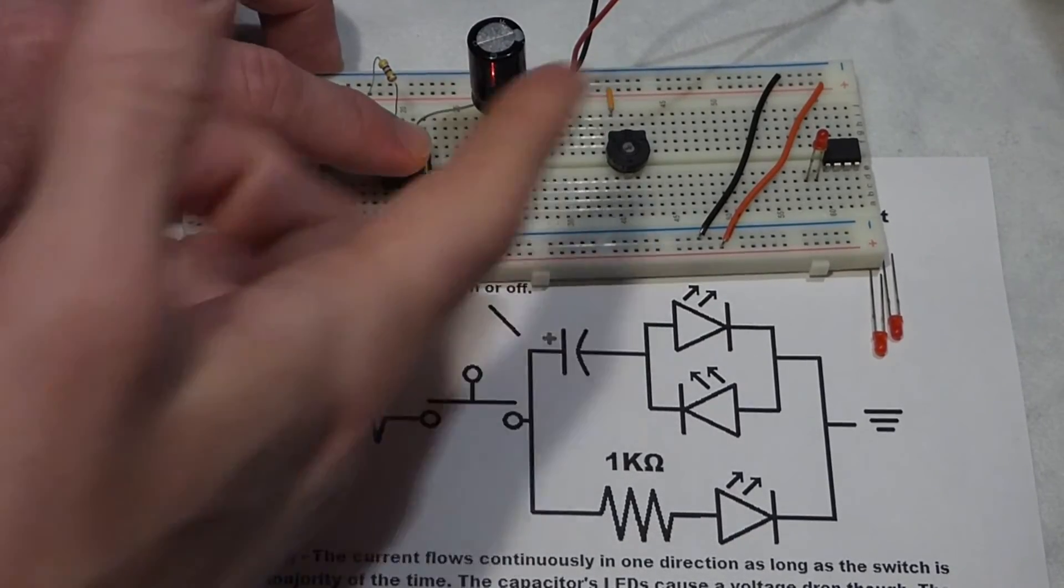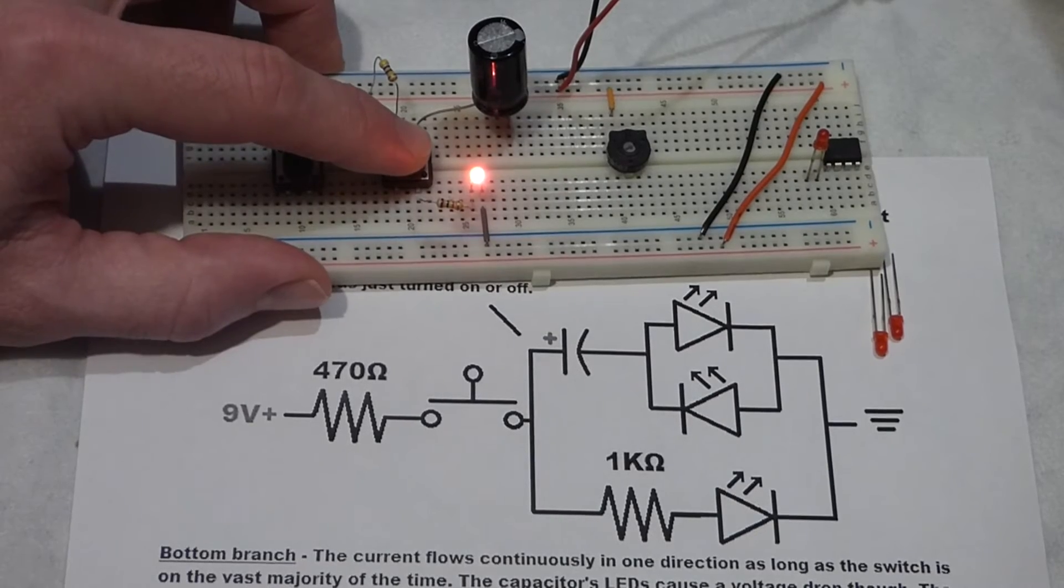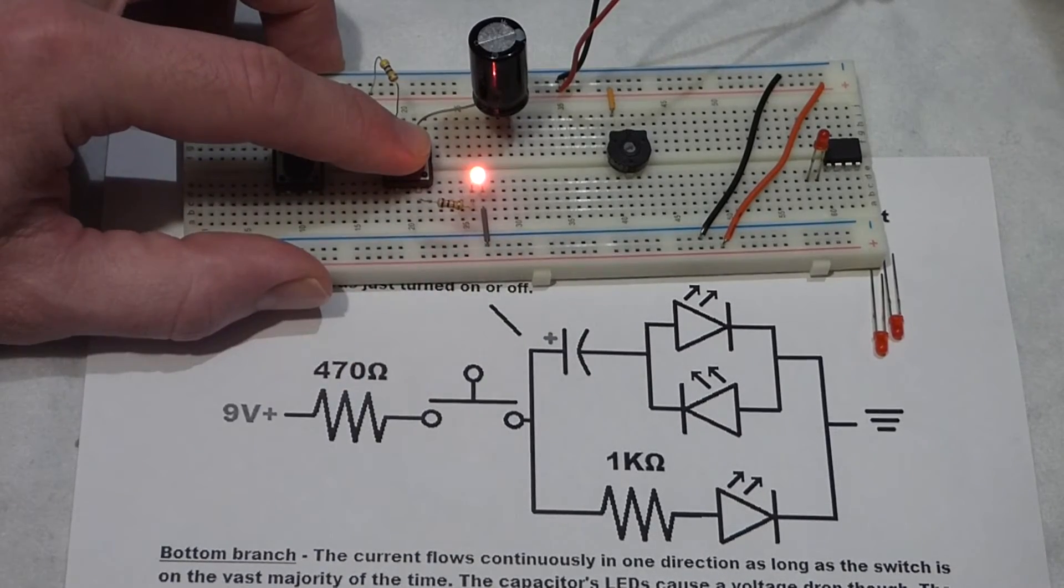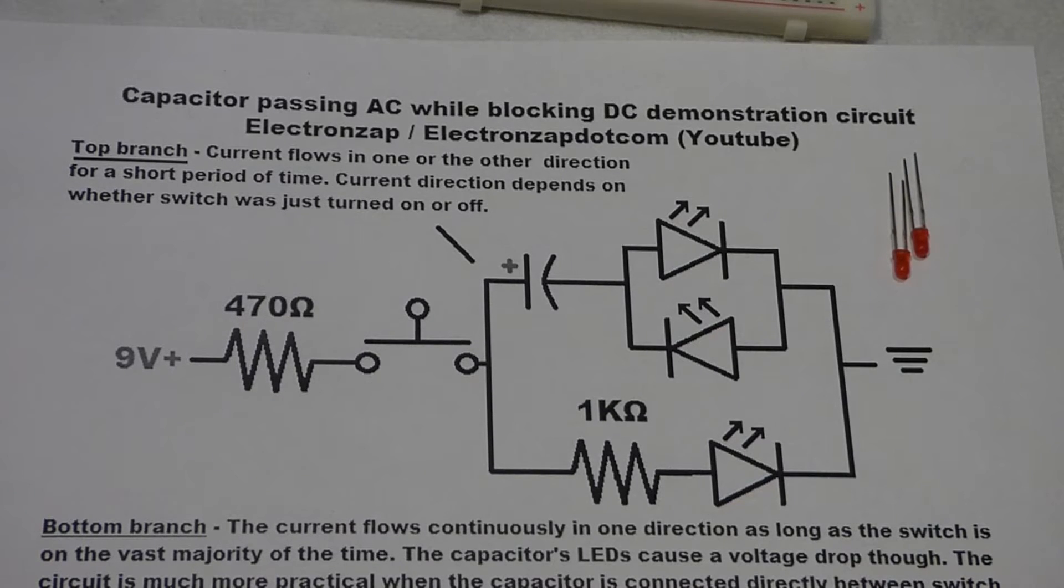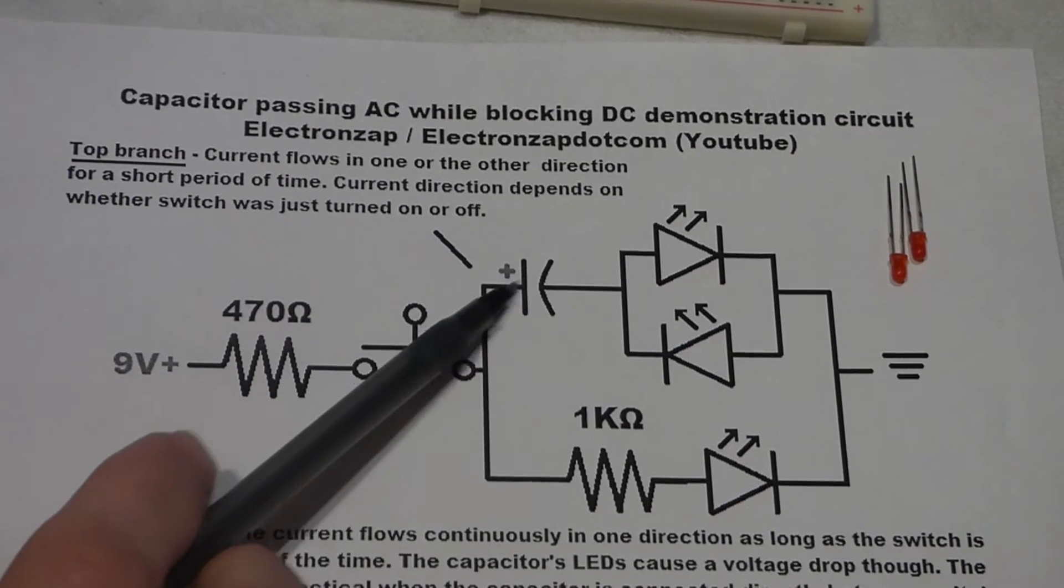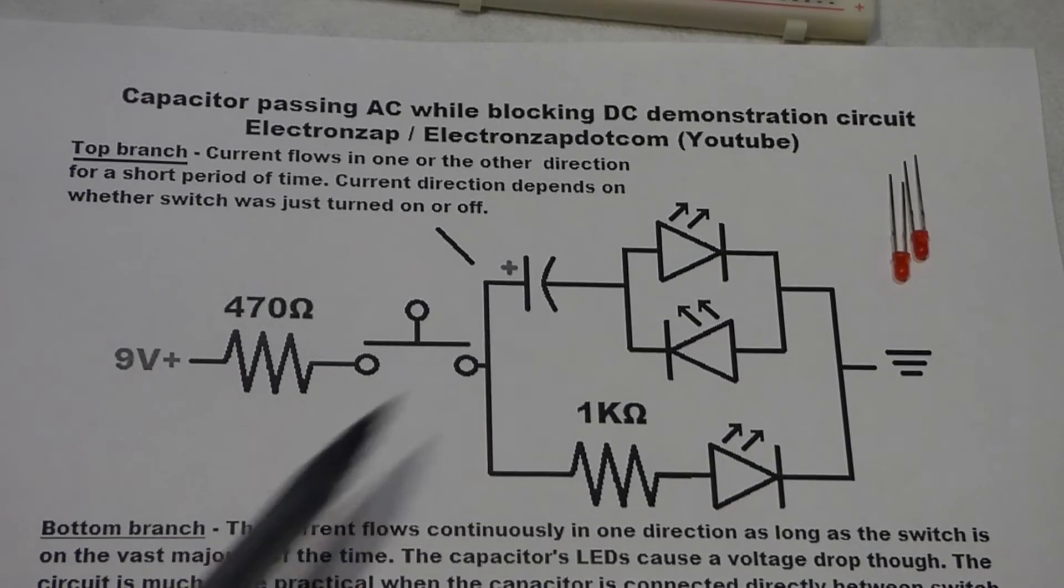As the capacitor charges and discharges, it keeps the current flowing through this part of the circuit. So the whole point of this demonstration circuit was just to clarify, you often hear that capacitors block direct current but pass alternating current.